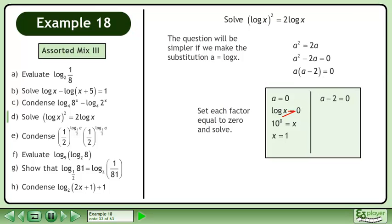Next we have a minus 2 equals 0. This gives us a equals 2. Replace a with log x. Use the 7-rule to convert to exponential form. The result is x equals 100. The values of x are 1 and 100.